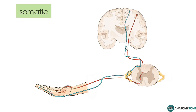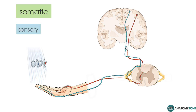Coming back to the somatic nervous system, this branch of the peripheral nervous system is responsible for conscious perception and voluntary motor responses. This diagram shows how a peripheral stimulus can be picked up and transmitted along a sensory neuron into the central nervous system, which can then coordinate a response and cause skeletal muscle contraction. Now we can talk about peripheral nerve fibers in terms of their functional divisions — specifically, the sensory and motor divisions.